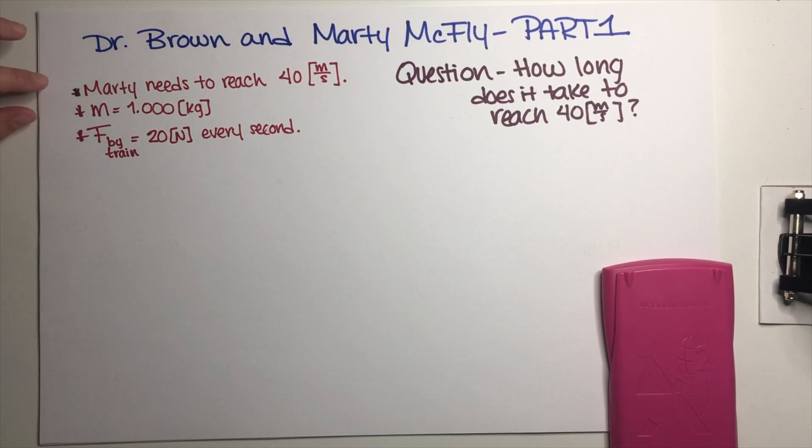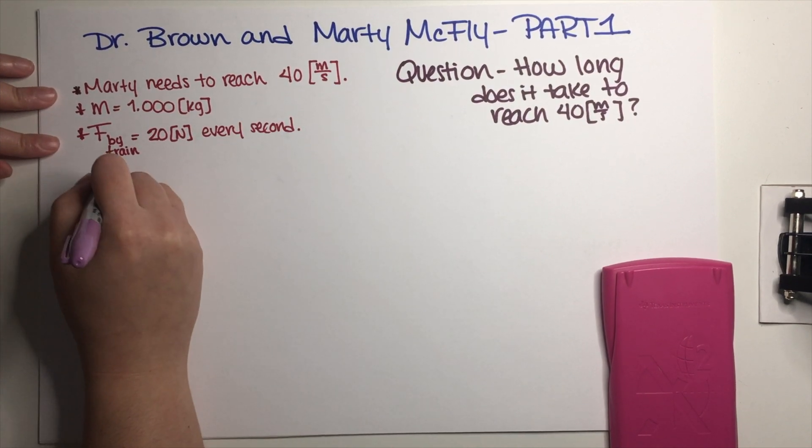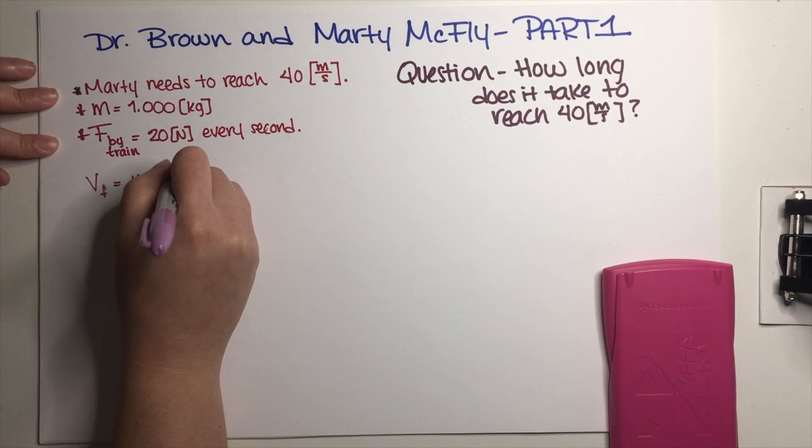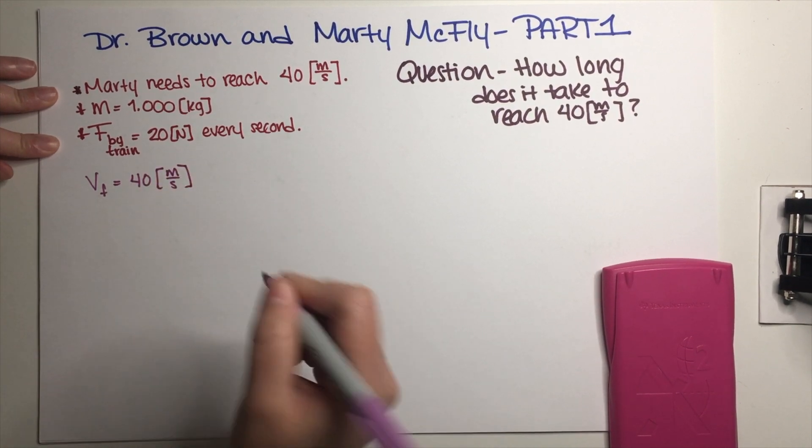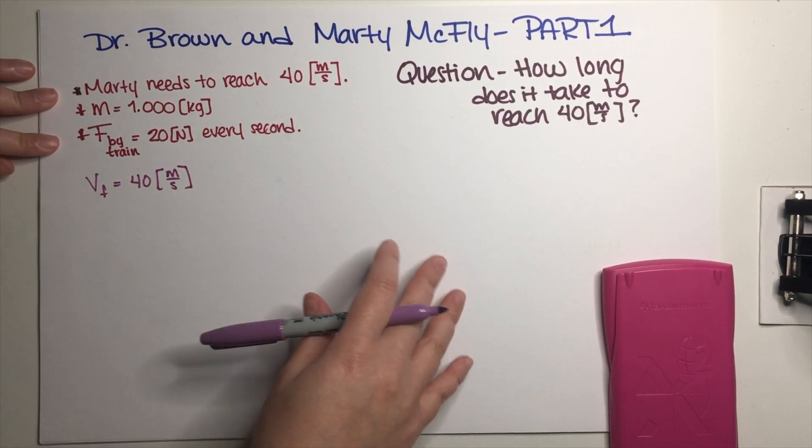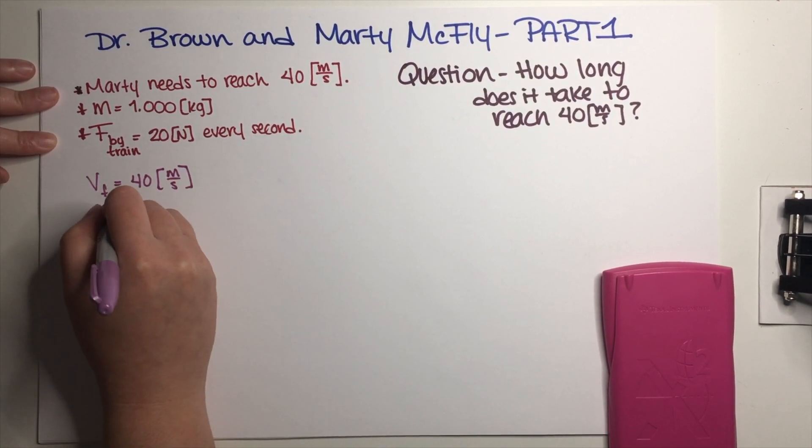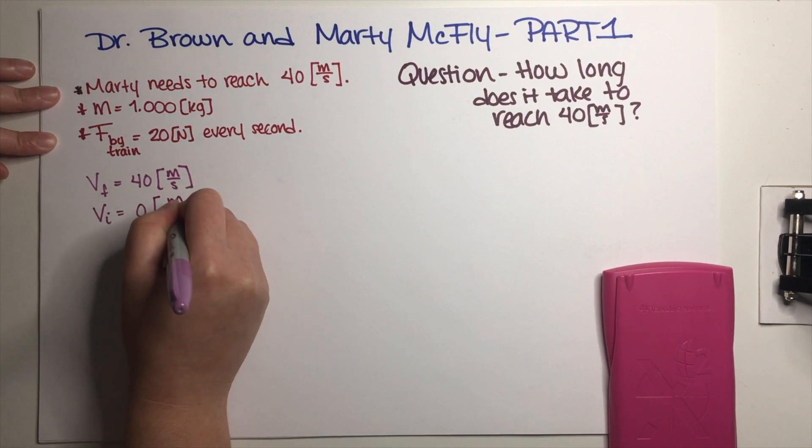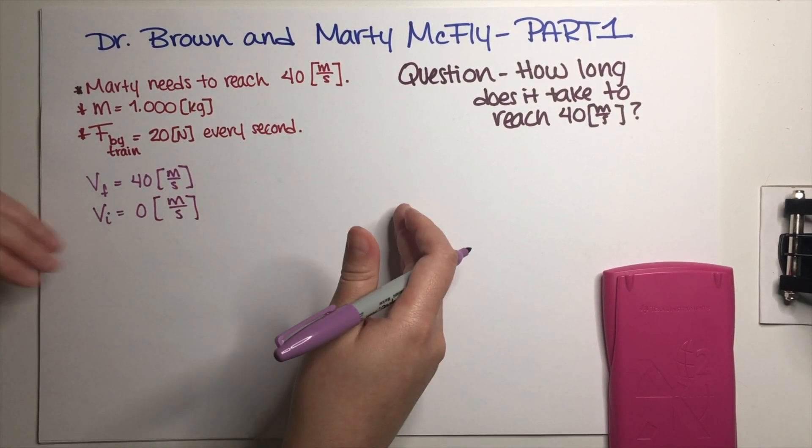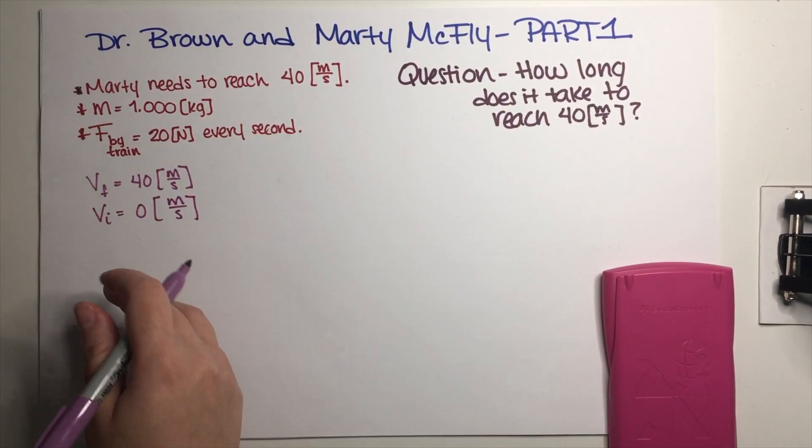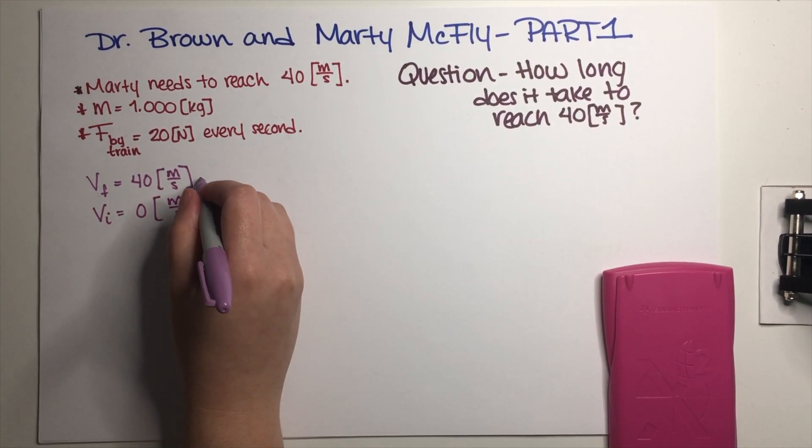What Marty basically needs to achieve is a final velocity of 40 meters per second, emphasis here on the word final. Marty needs a final velocity of 40 meters per second. Even though the problem is not being explicit about it, just from reading the situation we can understand that his initial velocity is just him being at rest, so he's basically at rest with the train right behind him.